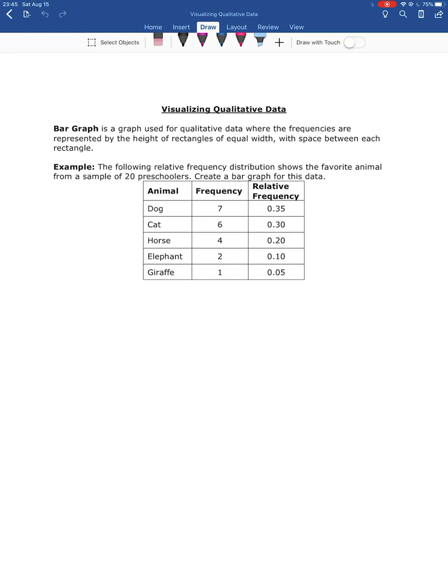So we're going to be using the example where we were looking at the favorite animal for 20 different preschoolers, and we're gonna go ahead and draw the bar graph for this. So I've already got the relative frequency distribution done here that we can look at, that way we don't have to go and recalculate all of this stuff.